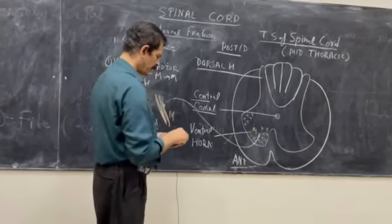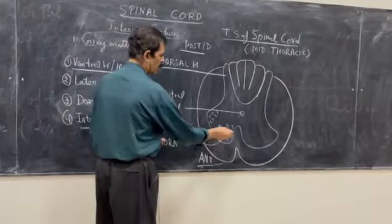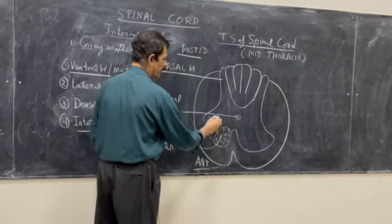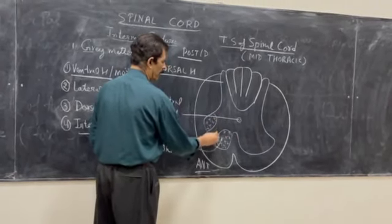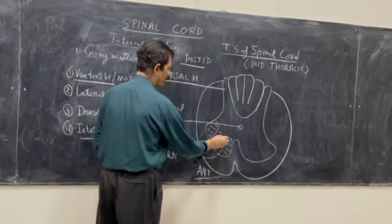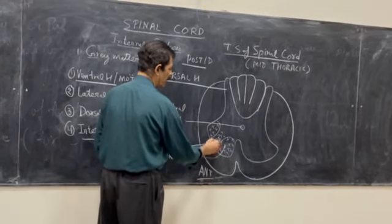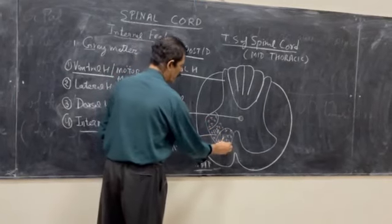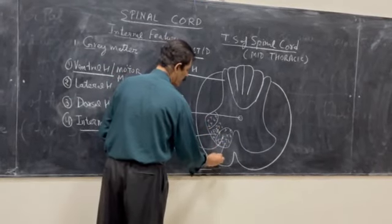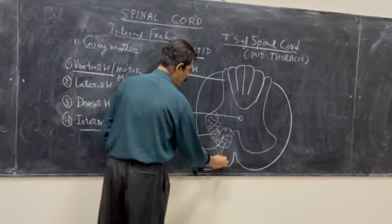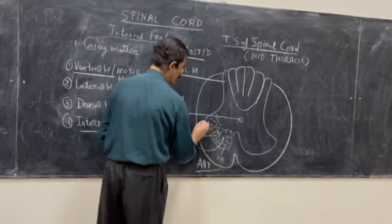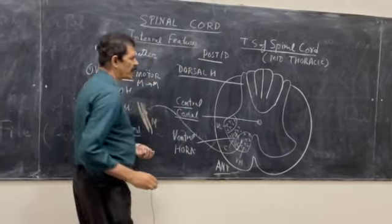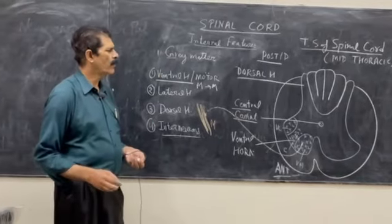Various groups of cells are present in the ventral horn. There is a medial group and a lateral group, and in between the two there is a central group of neurons. These are named as the ventromedial, ventrolateral, and central groups of neurons of the ventral horn.